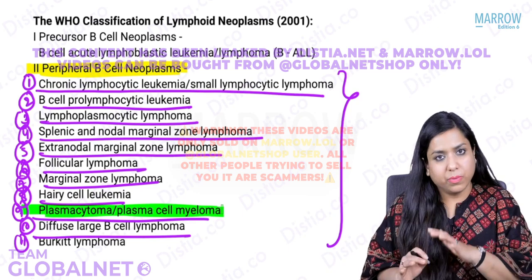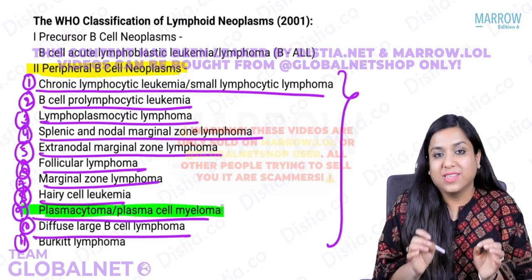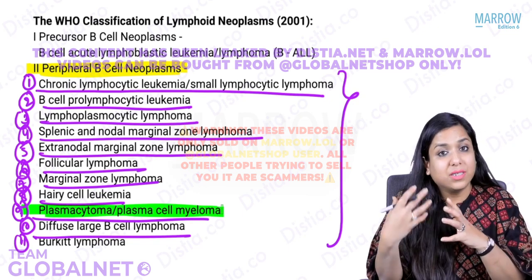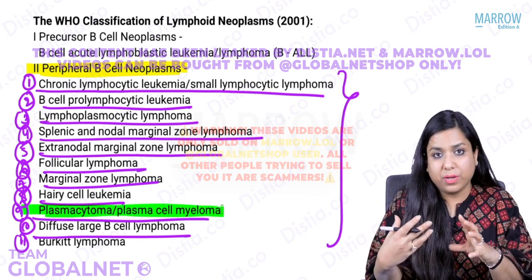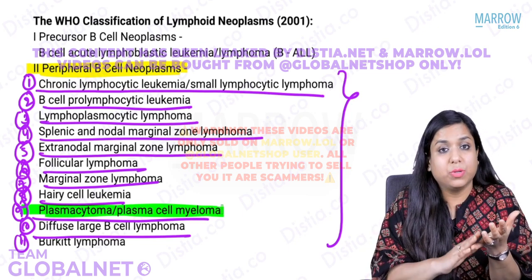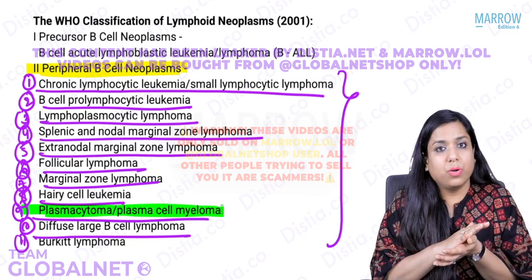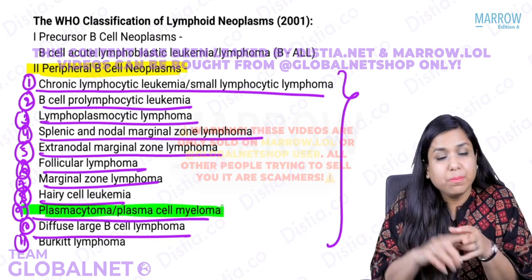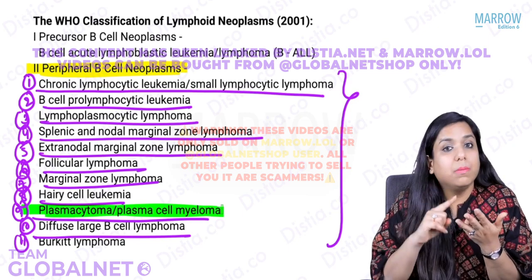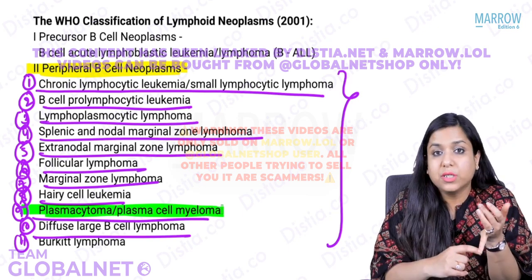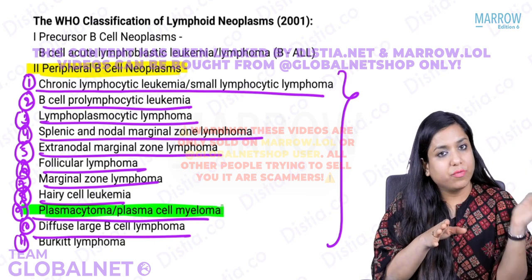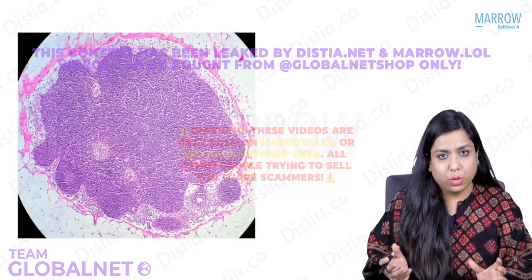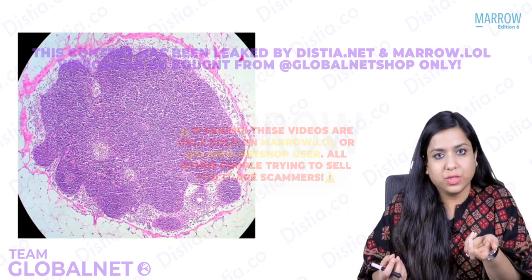The classification of peripheral B cell disorders which we are going to cover is very broad. There are CLL or SLL, B cell pro-lymphocytic leukemia, lymphoplasmacytic lymphoma — which develops mostly from Waldenström's macroglobulinemia — splenic and marginal zone lymphoma, extranodal marginal zone lymphoma, follicular lymphoma, marginal zone lymphoma, hairy cell leukemia, plasma cell myeloma, diffuse large B cell lymphoma, and Burkitt's lymphoma.